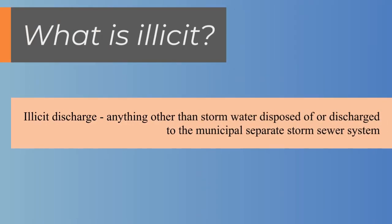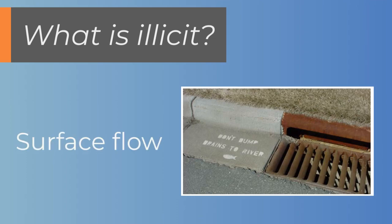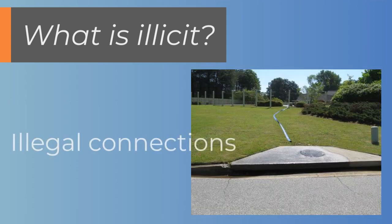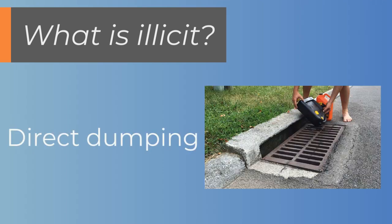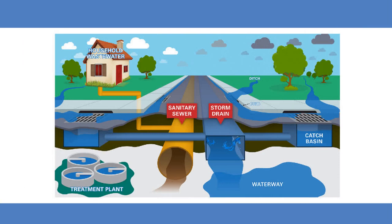Any disposal or discharge to the municipal separate storm sewer system that is not composed entirely of storm water is considered an illicit discharge. This can happen from surface flow, illegal connections to the storm drain system, and direct dumping into a storm drain or body of water. Anything flowing into a storm drain goes directly to our water resources and is not directed to a treatment facility.